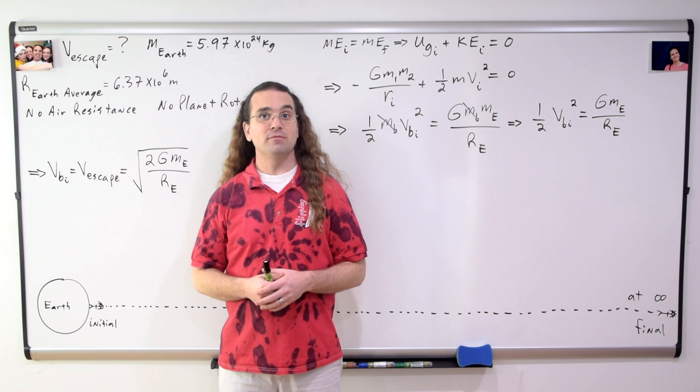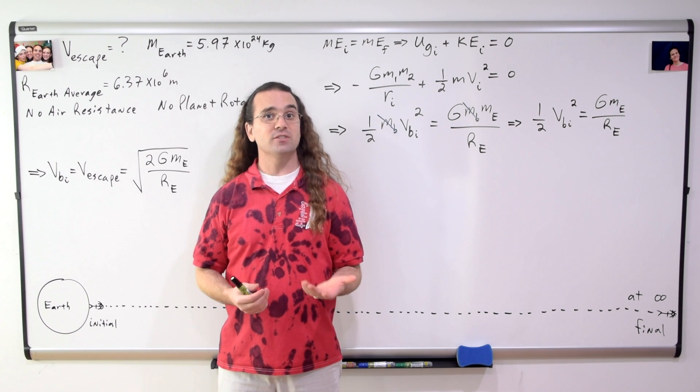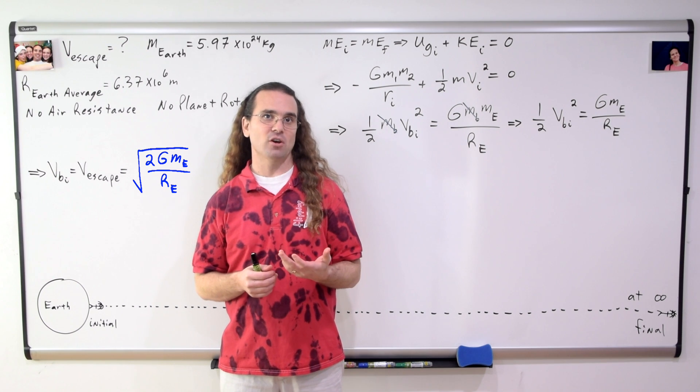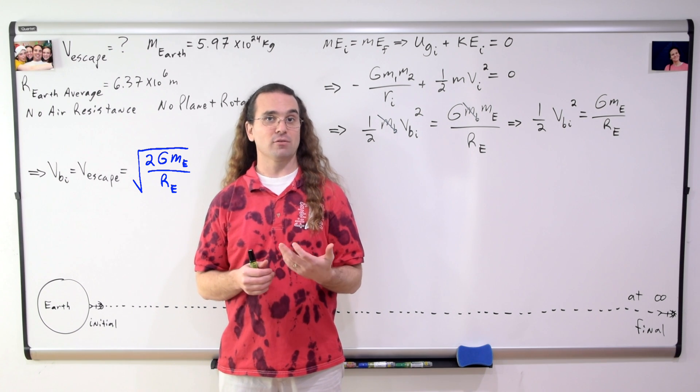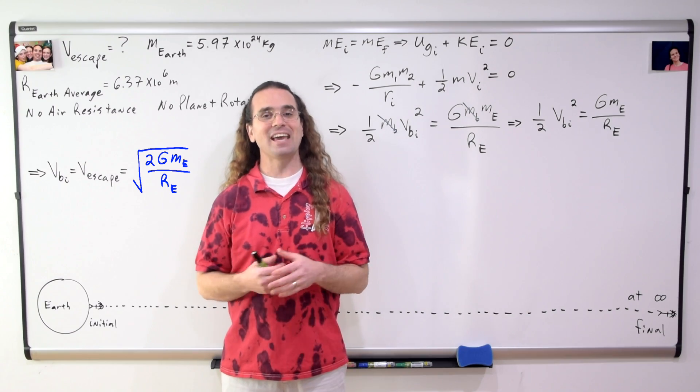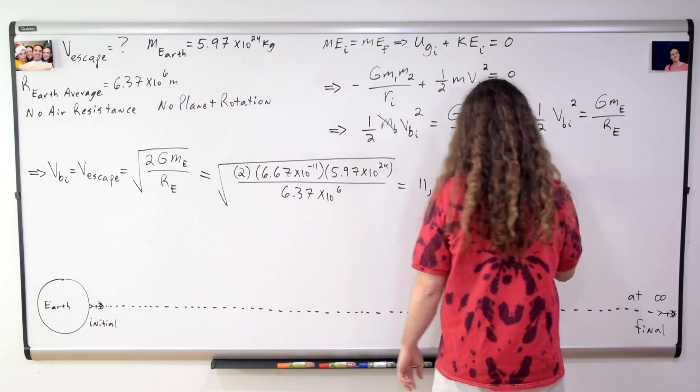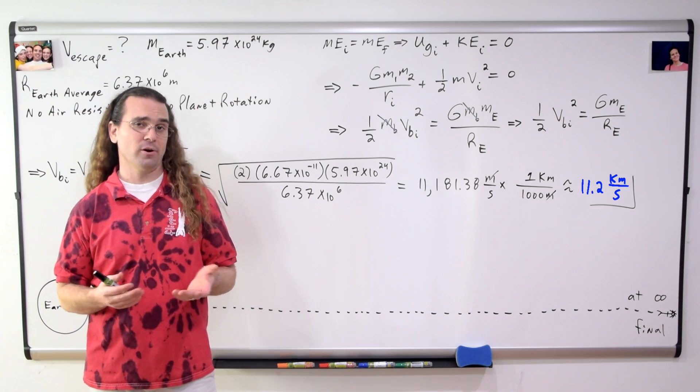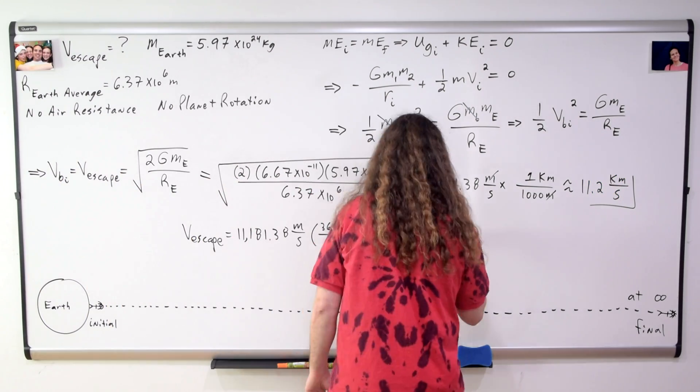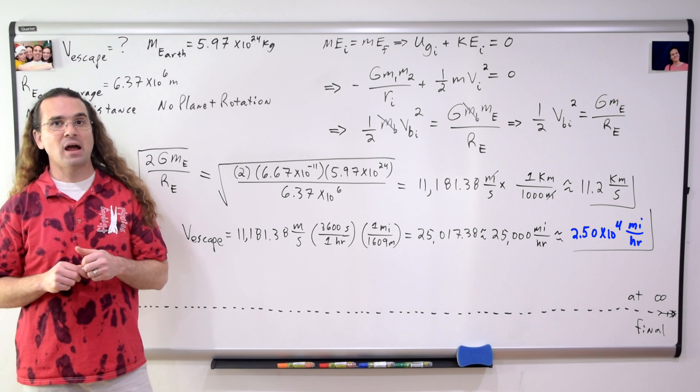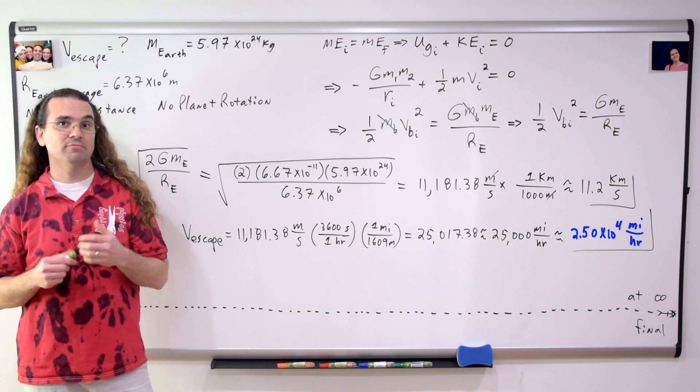And we can solve for the escape velocity, which is the square root of the quantity 2 times the universal gravitational constant times the mass of the Earth, all divided by the radius of the Earth. And now, Billy, we can substitute in numbers to get roughly 11.2 kilometers per second or roughly 25,000 miles per hour as the escape velocity of planet Earth.